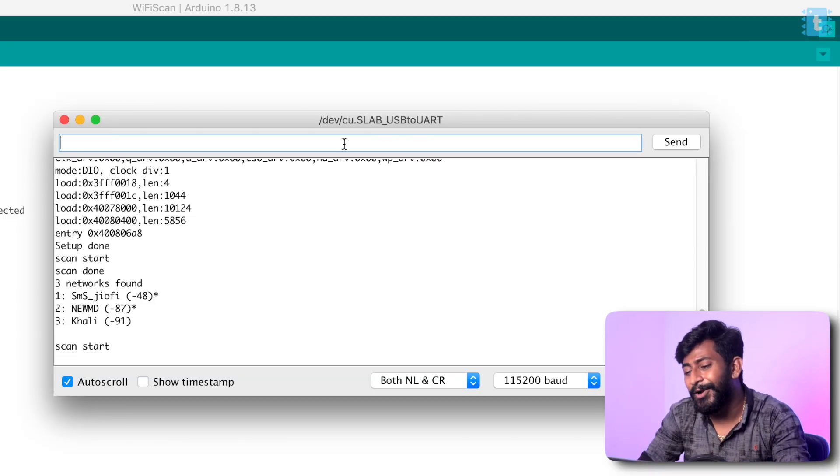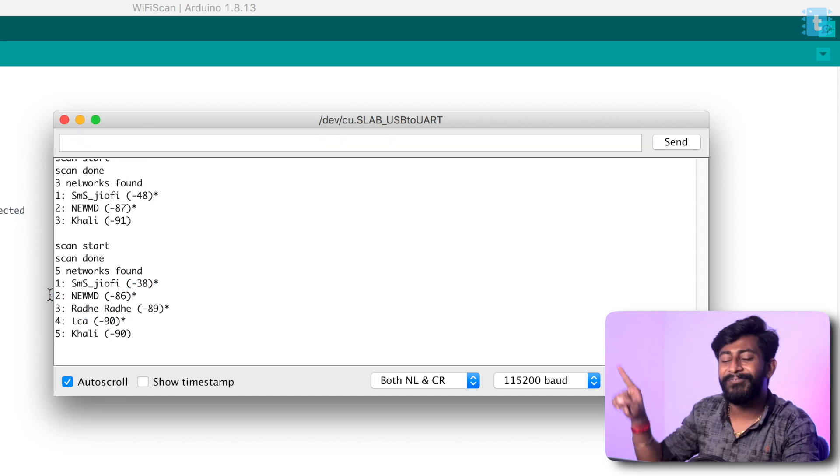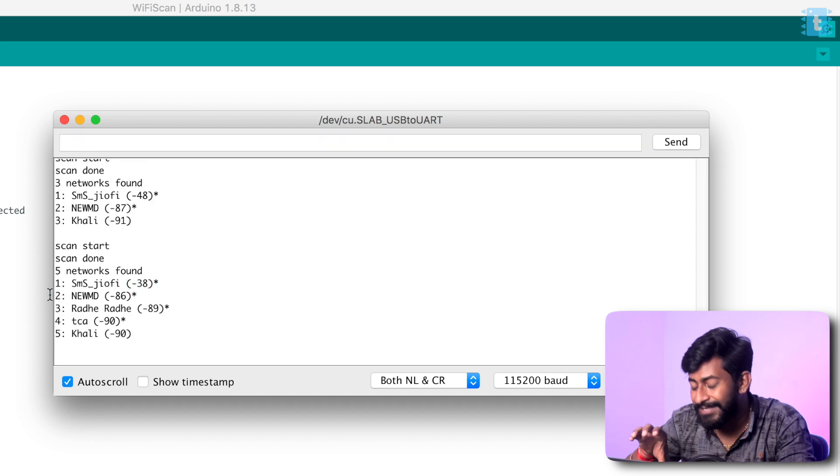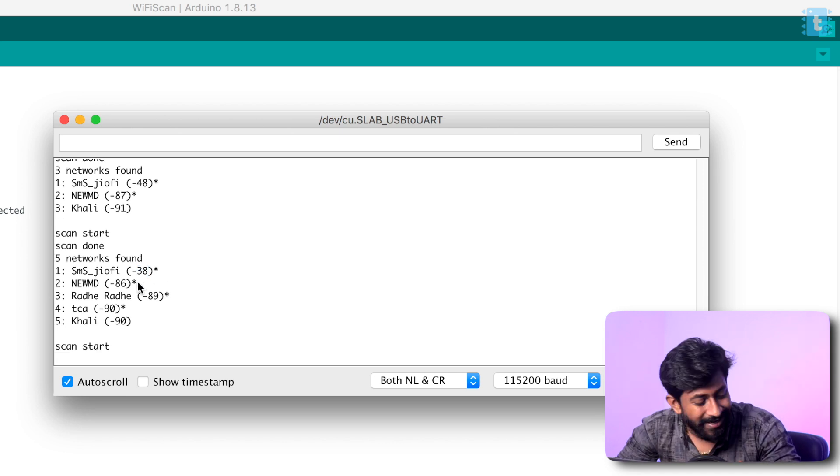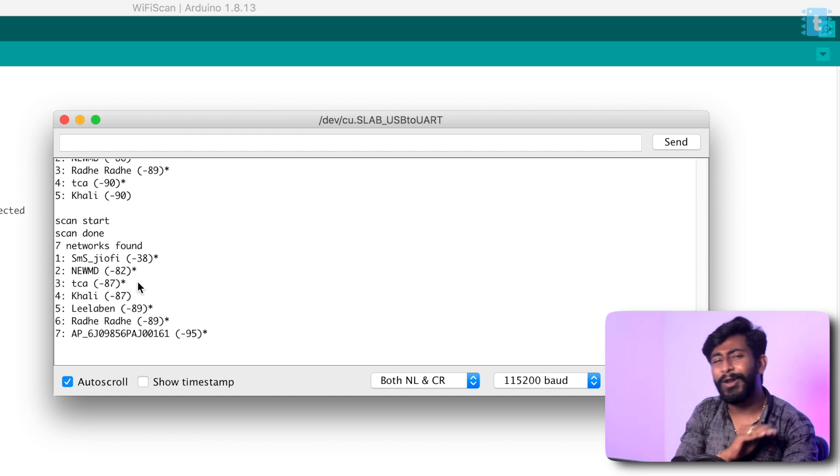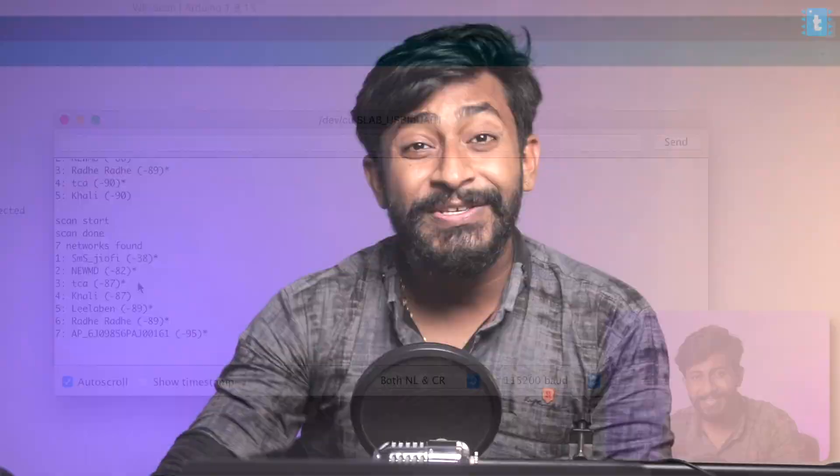Now as you can see on the serial monitor we are getting the results. It is successfully scanning all the nearby Wi-Fi networks and displaying their SSID name and their RSSI value onto the serial monitor. That means the code is successfully uploaded and working as well. That was all about how to use M5 stamp module with the help of the Arduino IDE. That's how you can easily use this M5 stamp board as you use your regular ESP32 based board.